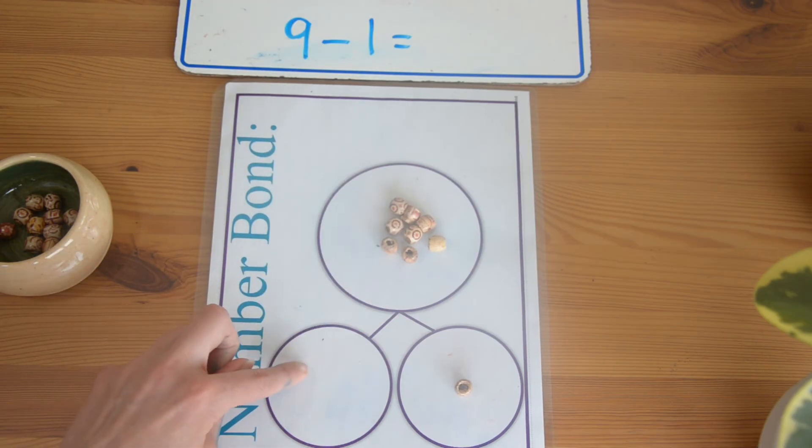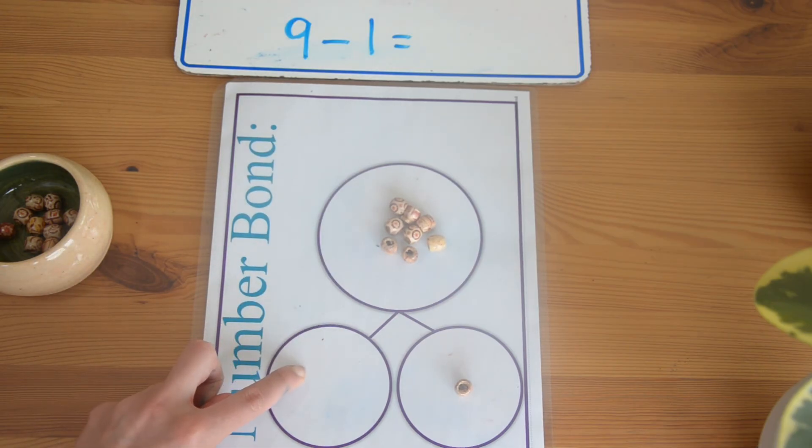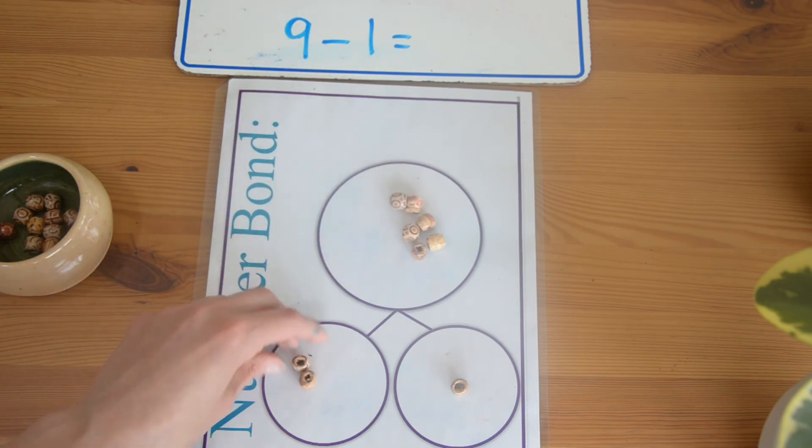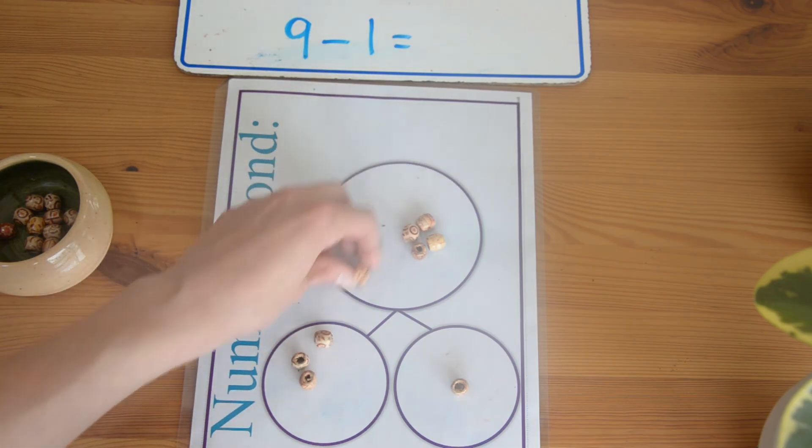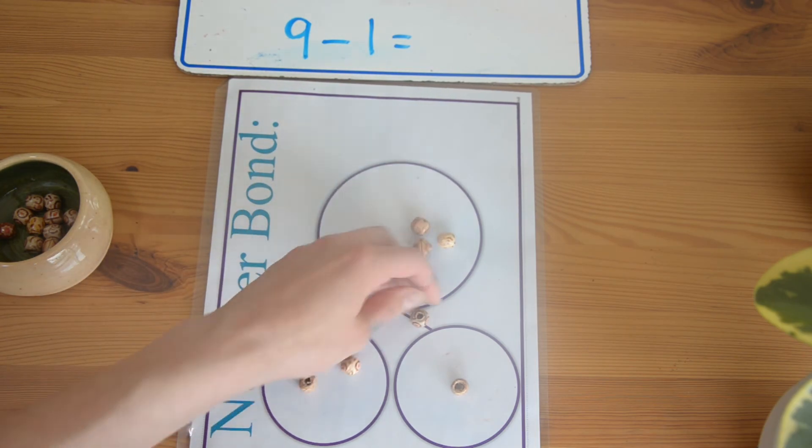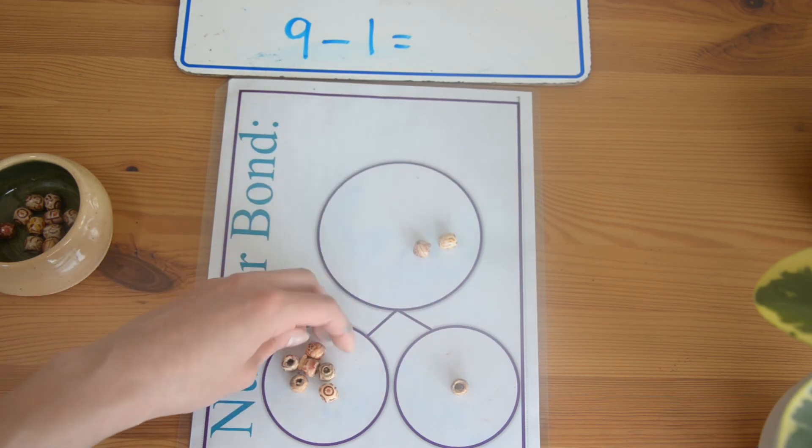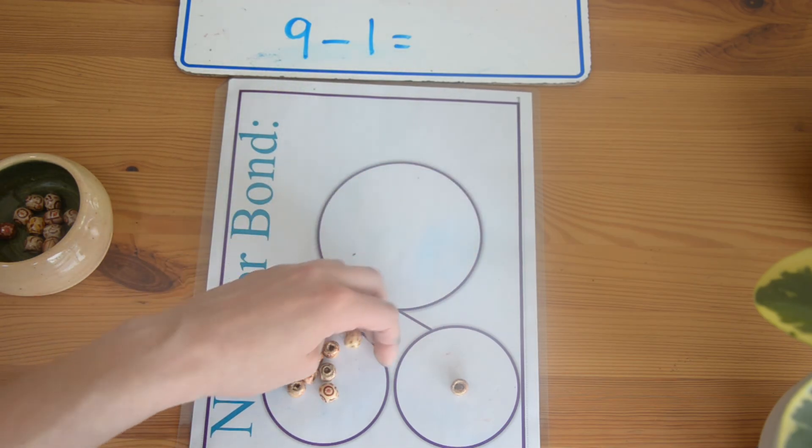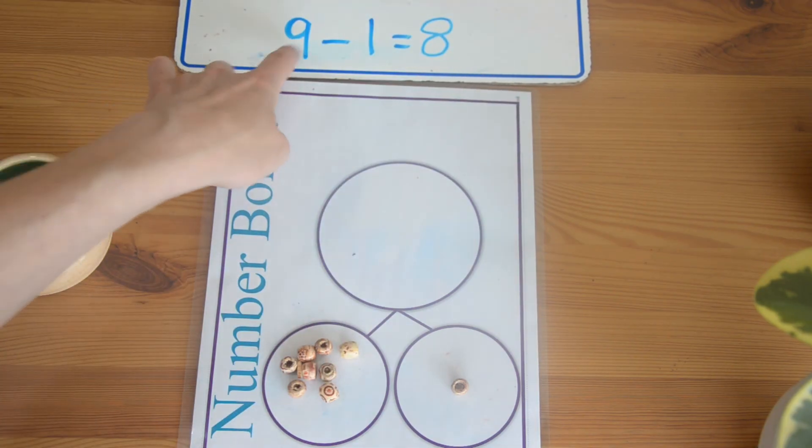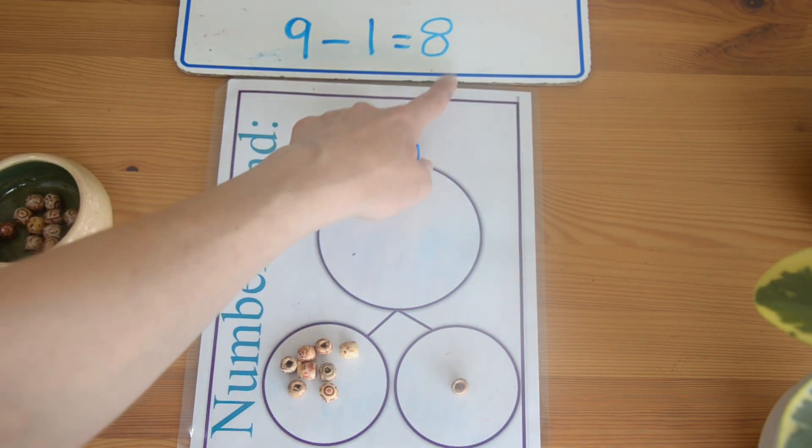Should we count what my answer is? 1, 2, 3, 4, 5, 6, 7, 8. Nine take away one equals eight.